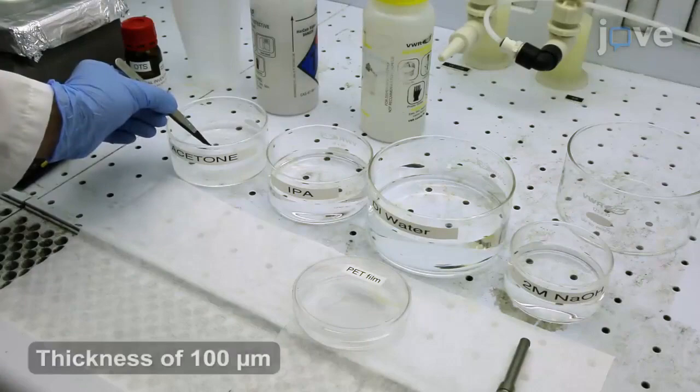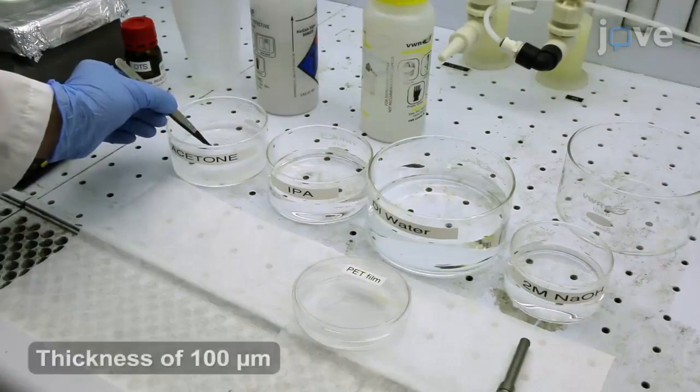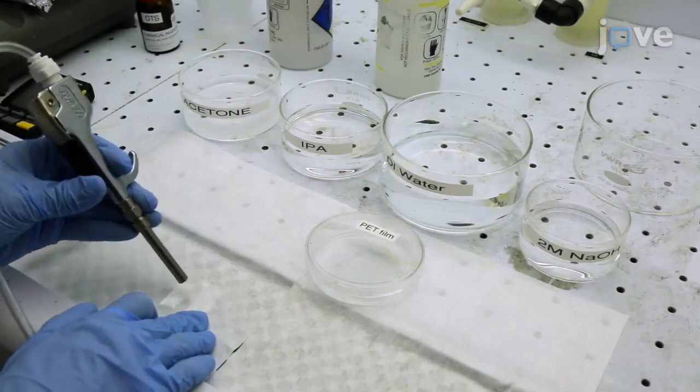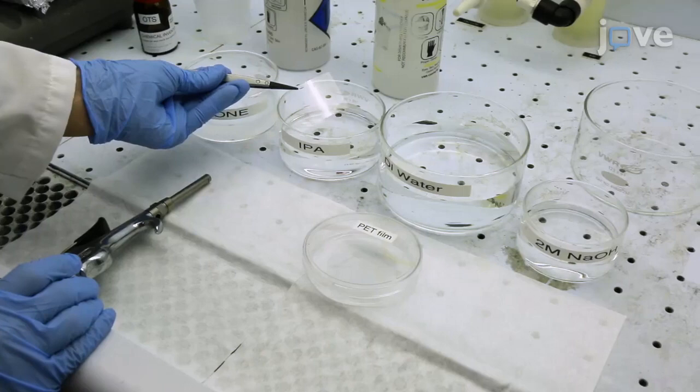Clean the surface with polyethylene terephthalate, or PET, film with 99.8% acetone for 5 minutes, followed by 99.9% isopropyl alcohol for 5 minutes.